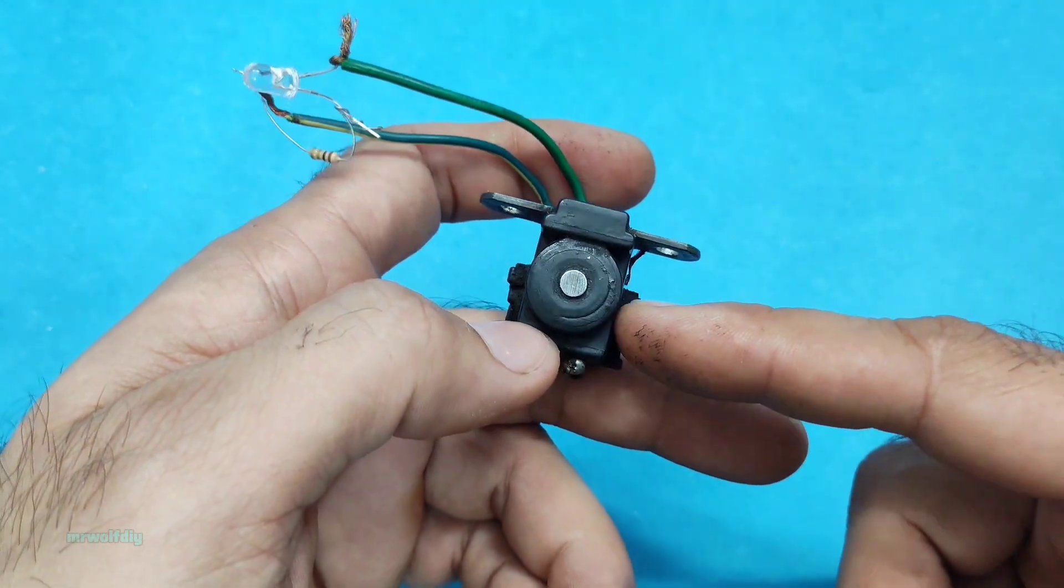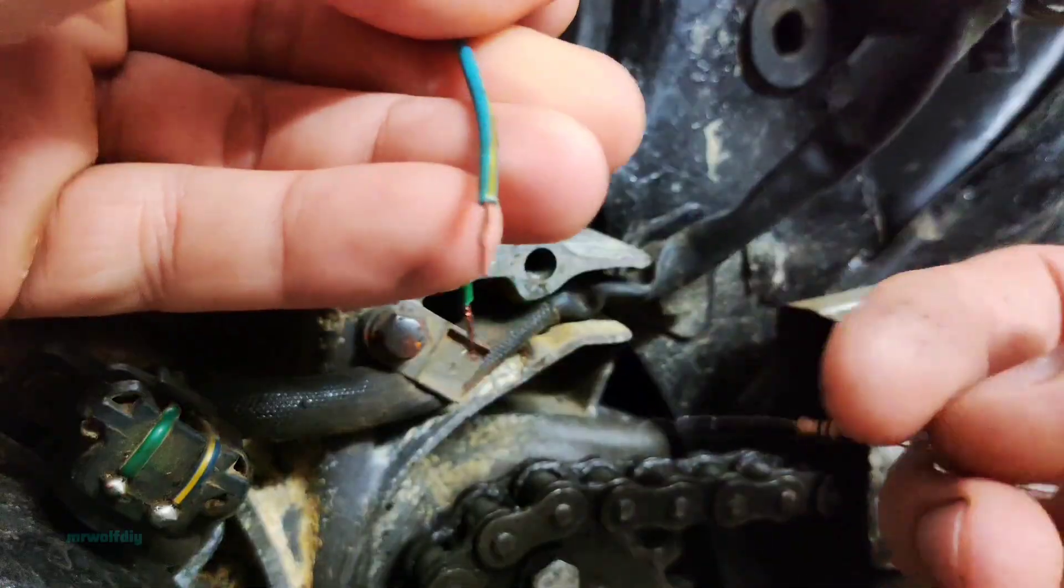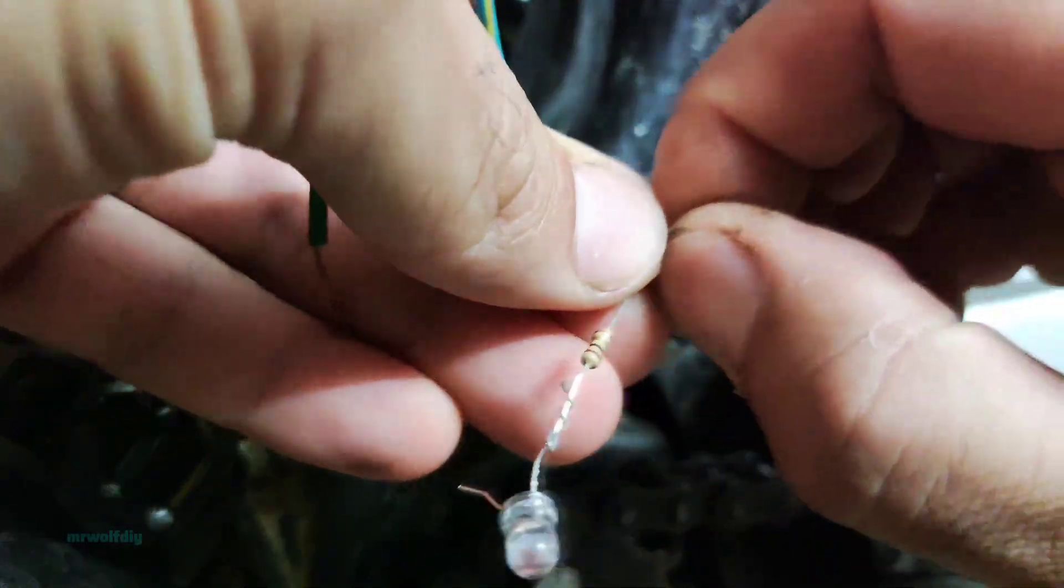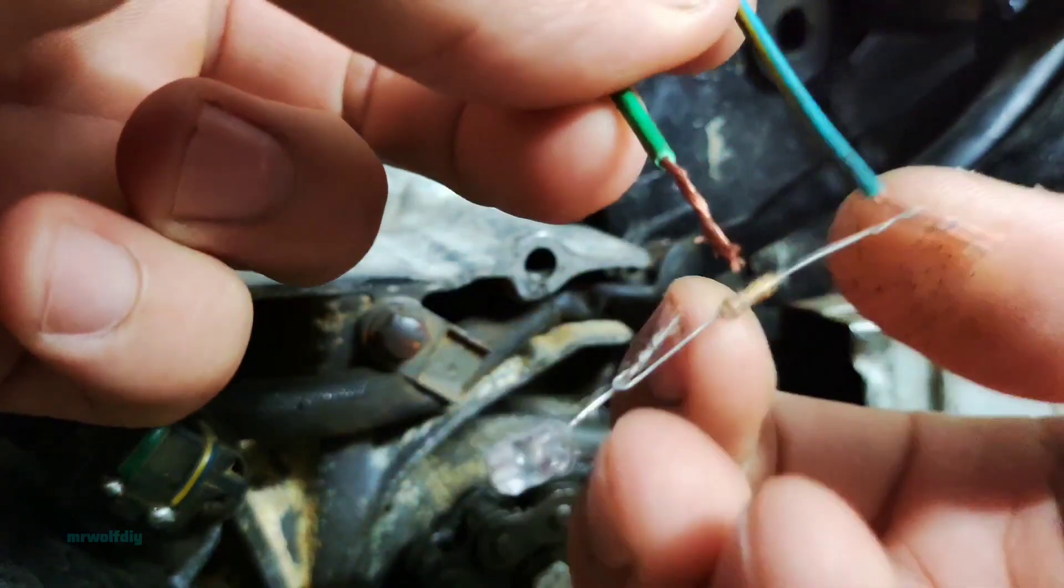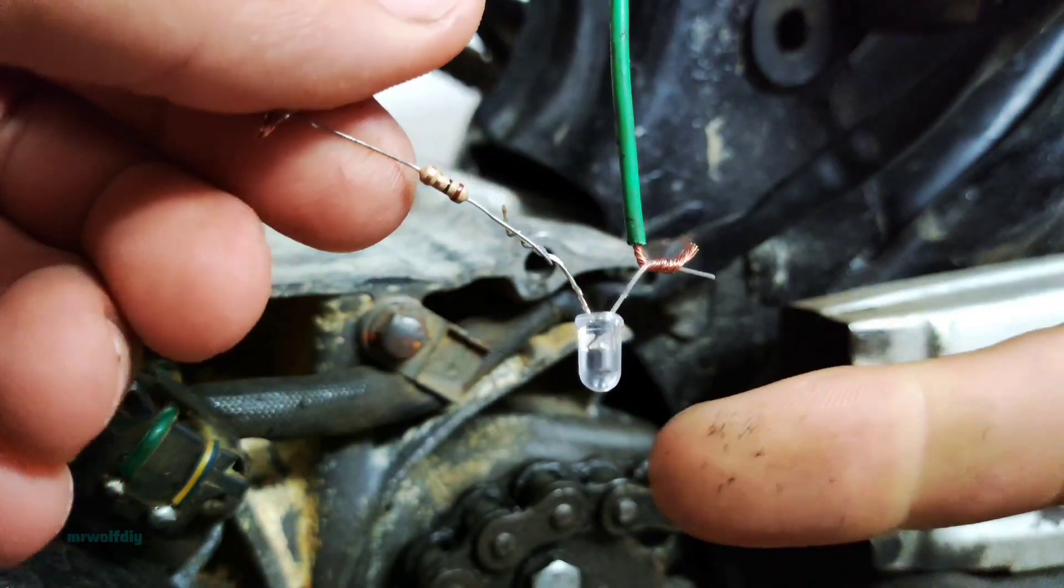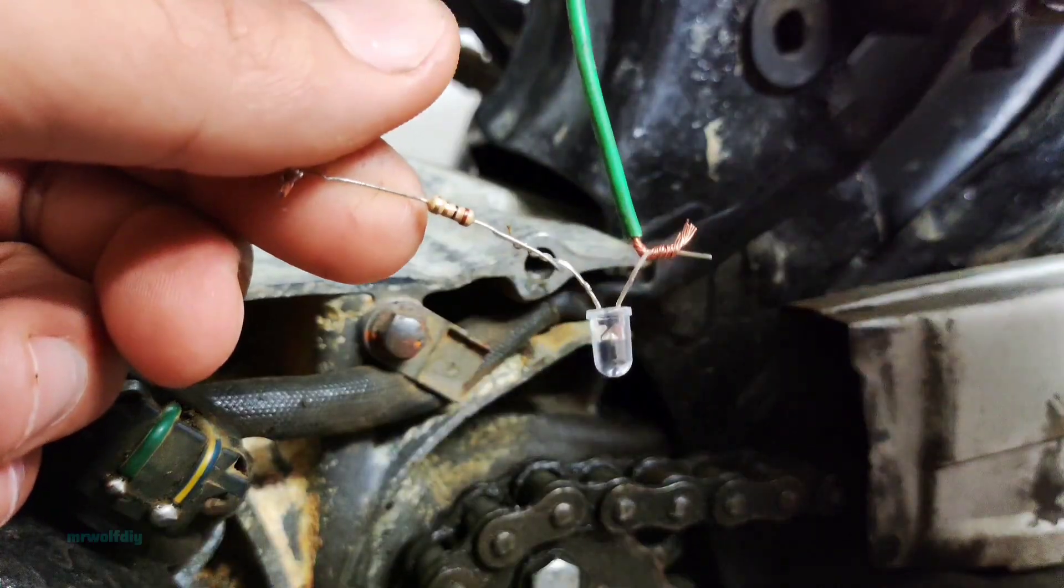Let's check it on the bike. Connect the LED to the pickup wires. The positive goes to the positive and the negative goes to the negative. Remember, you must disconnect the pickup wires from the wiring or CDI.